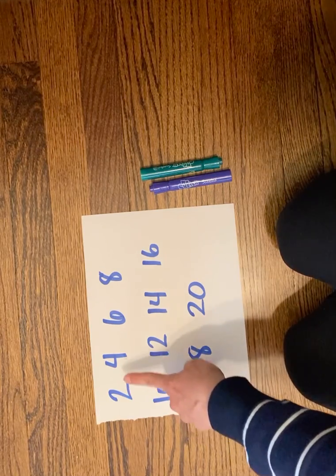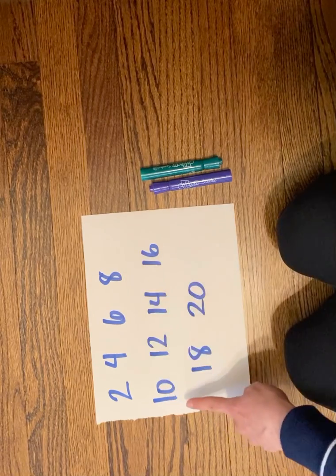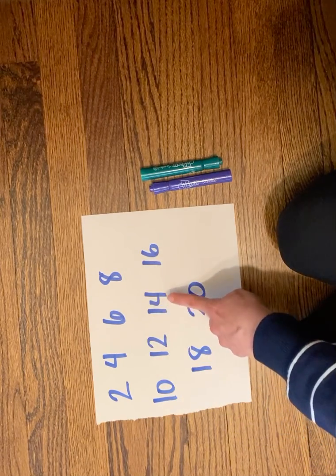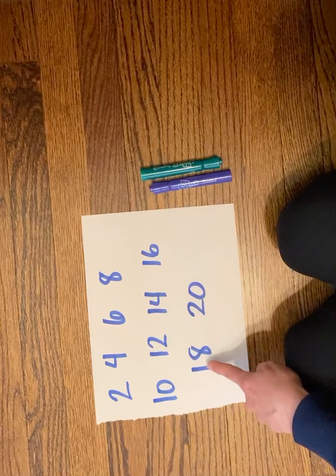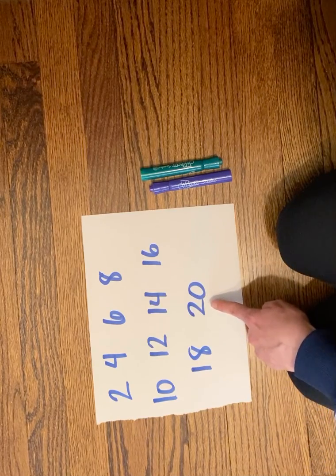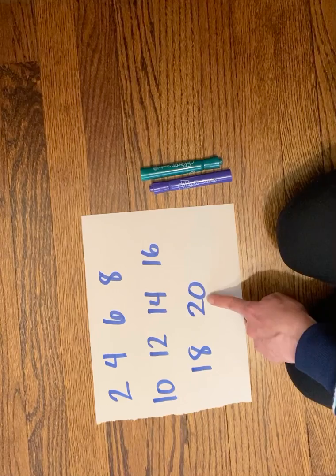You'll notice that we have all the counts of two: two, four, six, eight, ten, twelve, fourteen, sixteen, eighteen, and twenty. So from two times one to two times ten.